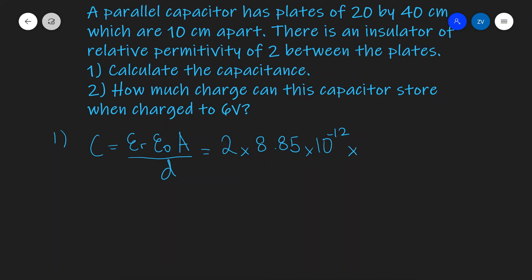Now I'm assuming those are rectangular plates so they're going to be 20 by 40 centimeters so let's not forget to convert those to meters. The area will be 0.2 which is 20 centimeters multiplied by 0.4 meters which is 40 centimeters.